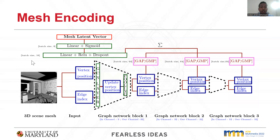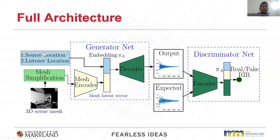Our mesh encoder network transforms the simplified indoor scene mesh to a low-dimensional latent space. Triangular meshes can be represented using graph data. Therefore, we represent the 3D scene meshes as graphs by extracting the edge connectivity and vertex coordinates from the mesh and pass them to our graph neural network. The graph network reduces non-linearity by transforming 3D scene meshes to latent space. We concatenate the mesh latent vector with the source and listener positions in 3D Cartesian space to generate a scene vector embedding PiA of dimension 14.